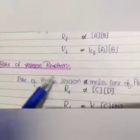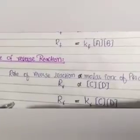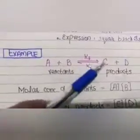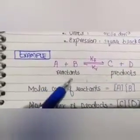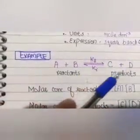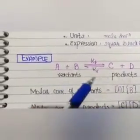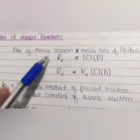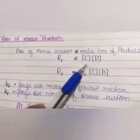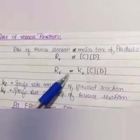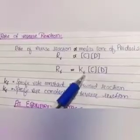For the rate of reverse reaction — products converting back to reactants, the backward reaction — the rate depends on the concentration of products. The rate of reverse reaction Rr is directly proportional to the molar concentration of products [C][D]. Replacing proportionality with equality gives constant Kr, where small r means reverse reaction. So: Rr = Kr[C][D].